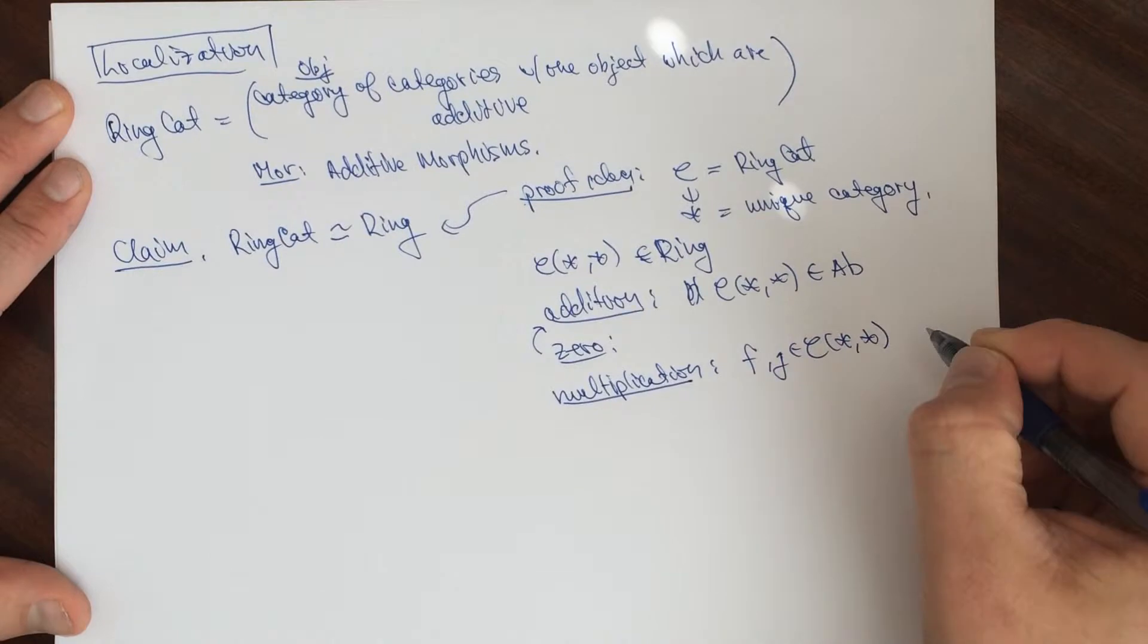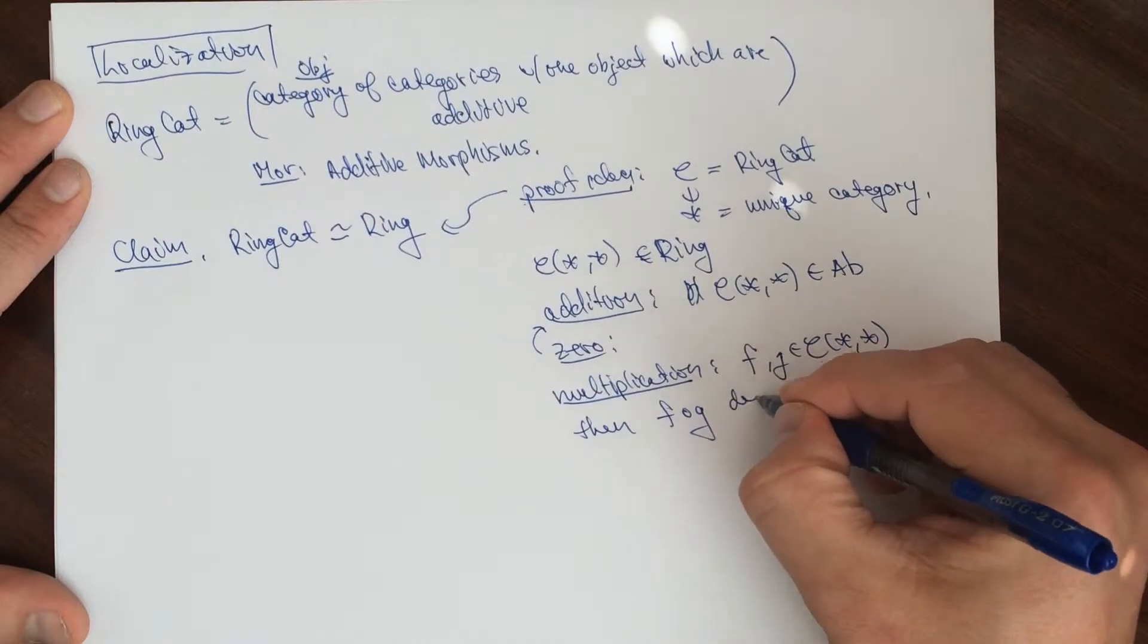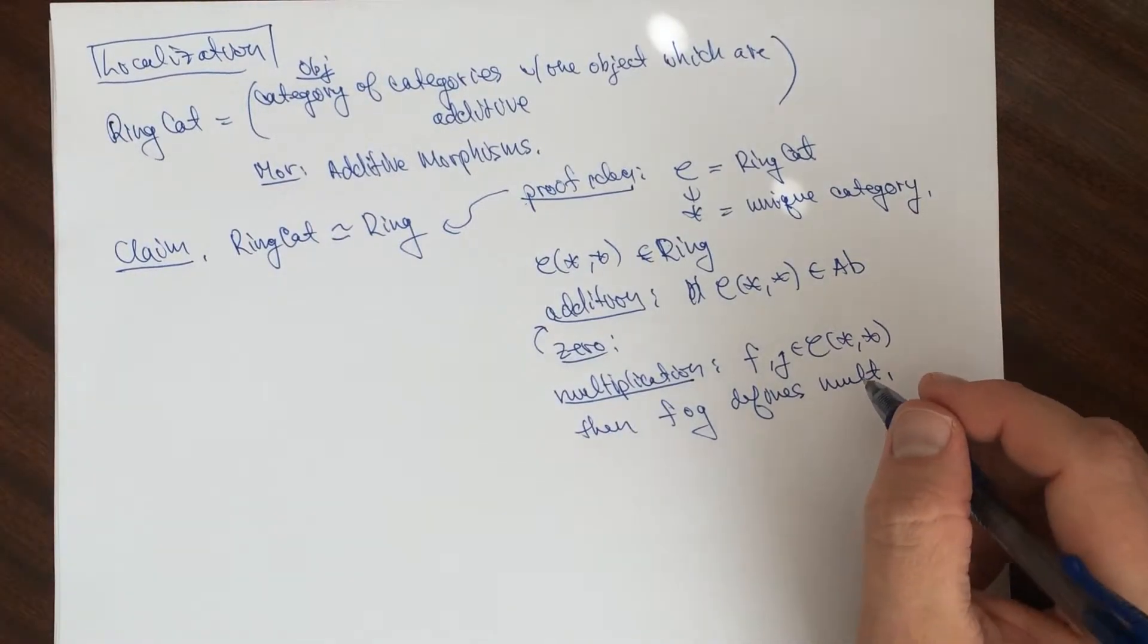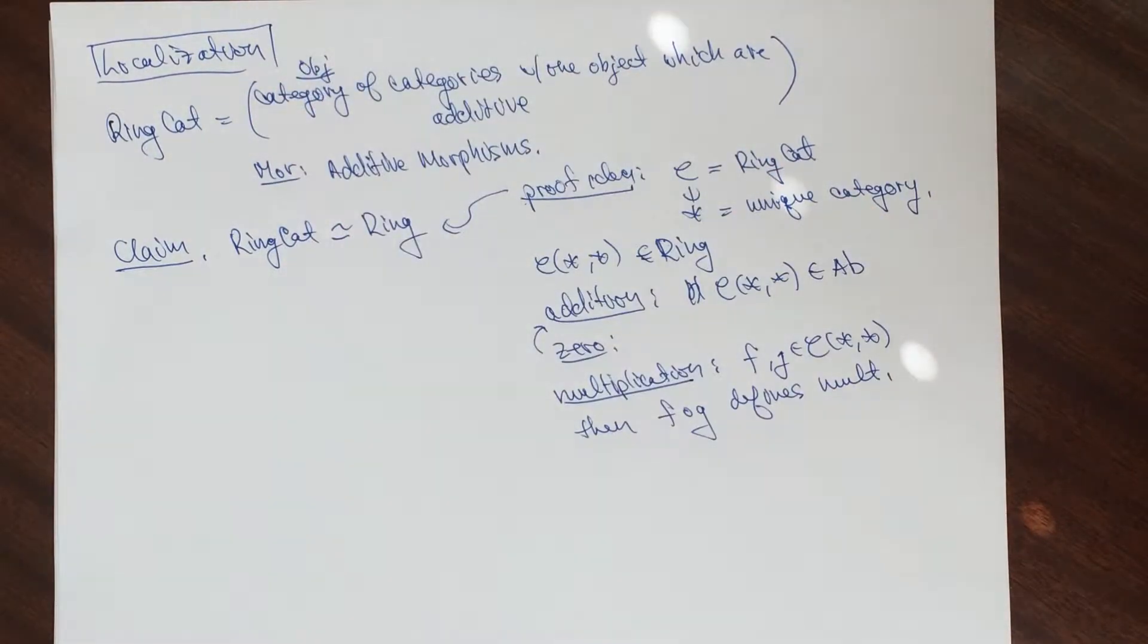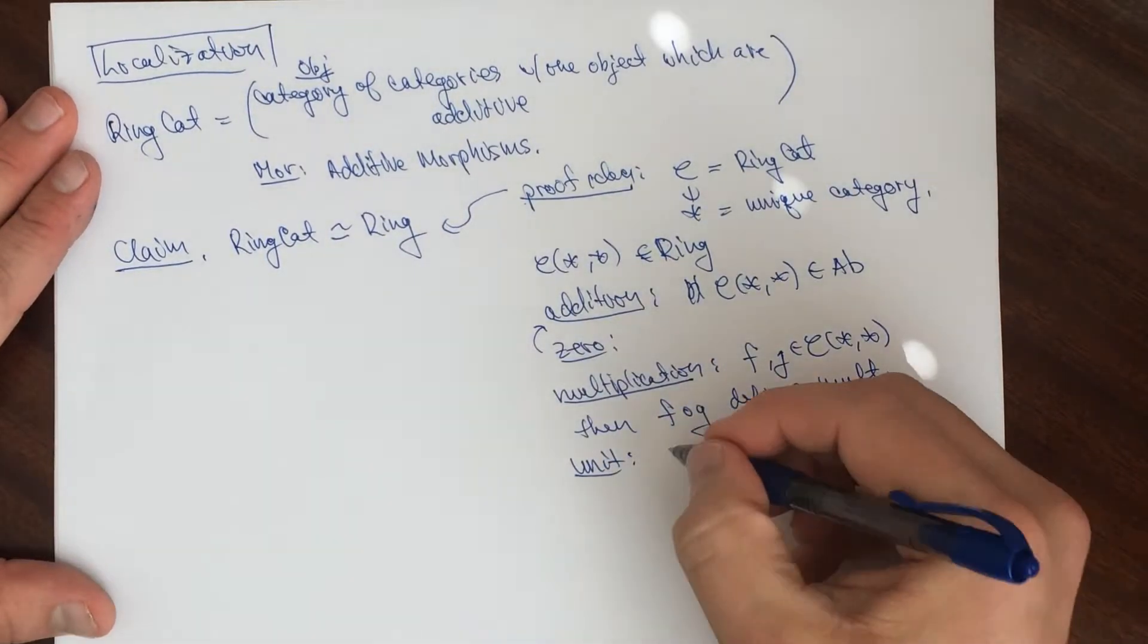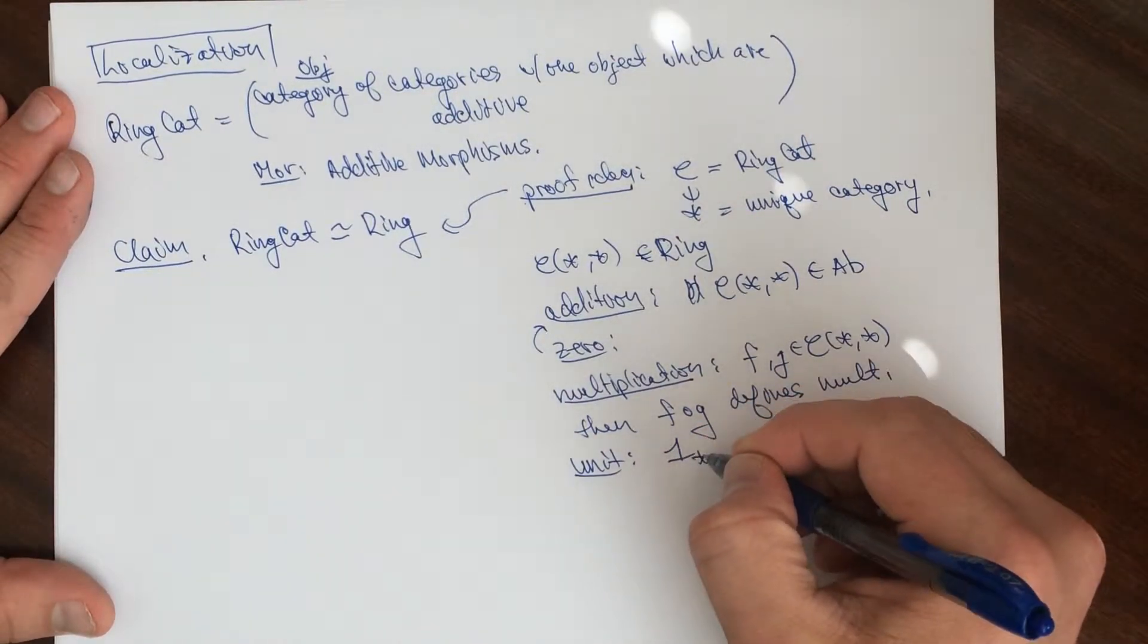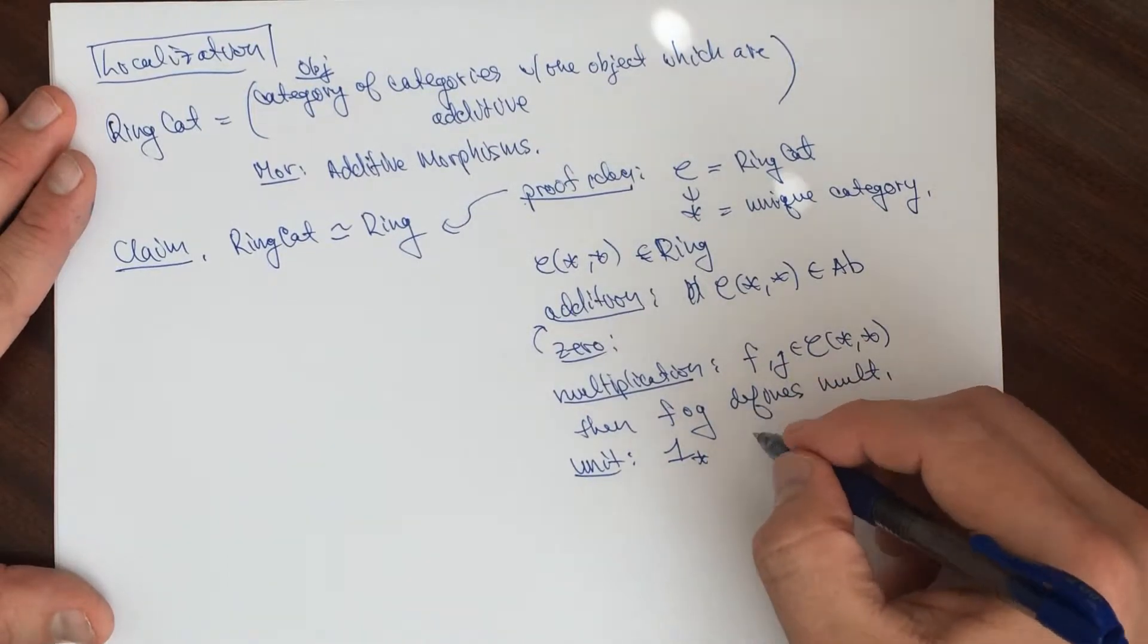Distributivity with respect to addition comes from these additive category axioms. And the unit, the multiplicative unit, the multiplicative identity, comes from the unit of the star. There's an identity transformation. That comes from the axioms of categories. And so this is the identity.